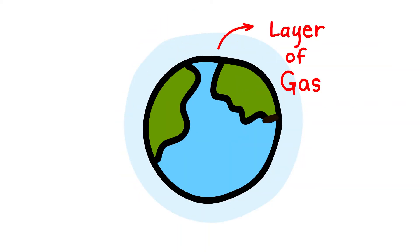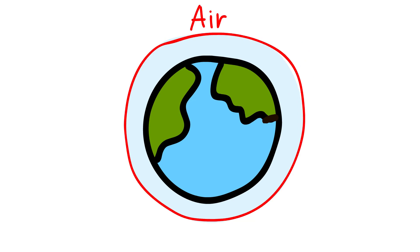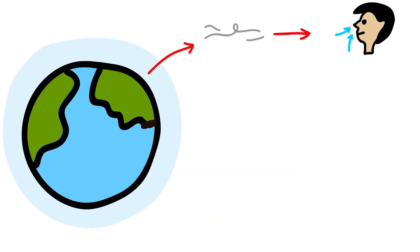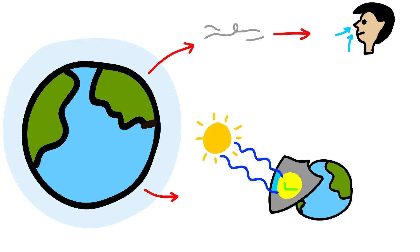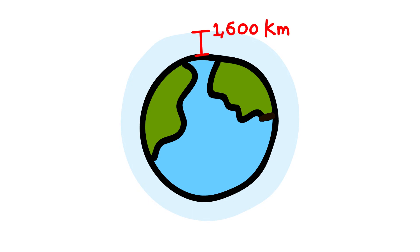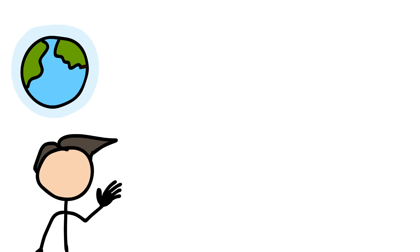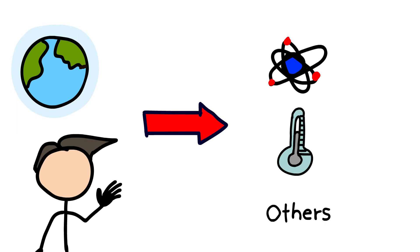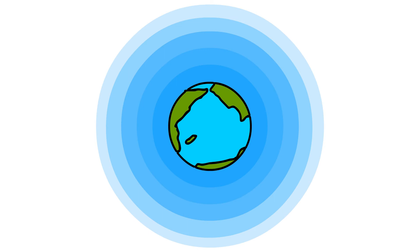Atmosphere. The Earth is surrounded by a layer of gas called the atmosphere. This thin blanket of air is an integral and important aspect of the planet. It provides us with the air we breathe and protects us from the harmful effects of the sun's rays. The atmosphere extends up to a height of about 1,600 kilometers. It is divided into five layers: the troposphere, the stratosphere, the mesosphere, the thermosphere, and the exosphere.